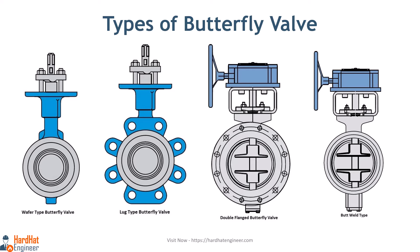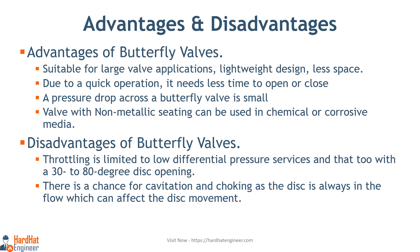There are many design types available such as wafer type, lug style type, flange type, butt-welded ends types, zero offset, double offset, and triple offset. Advantages: butterfly valve is suitable for large valve applications due to its compact, lightweight design that requires considerably less space than other valves. Due to quick operation, it needs less time to open or close. Maintenance costs are usually low, and pressure drop across a butterfly valve is small.